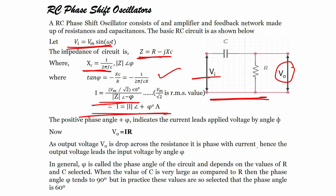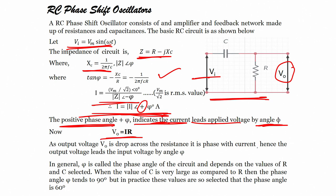The positive phase angle indicates that the current leads the voltage by phase angle φ. Since V_o equals I·R, the output voltage V_o is dropped across the resistance, it is in phase with the current, and the output voltage leads the input voltage by angle φ. In general, φ is called the phase angle of the circuit and depends on the values of R and C selected.